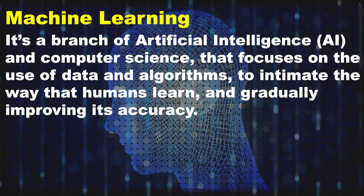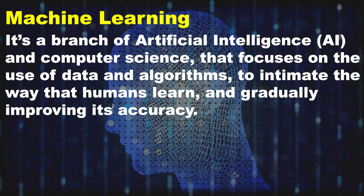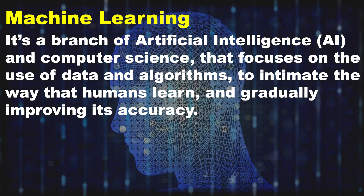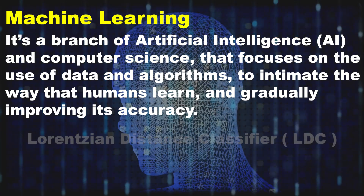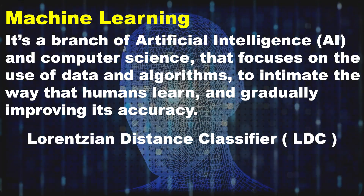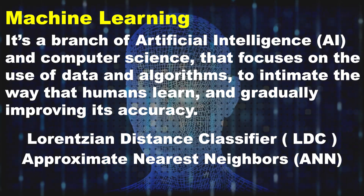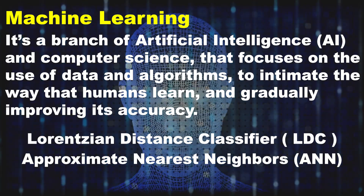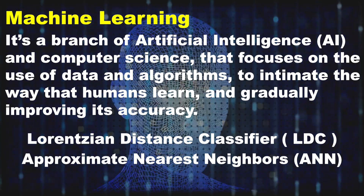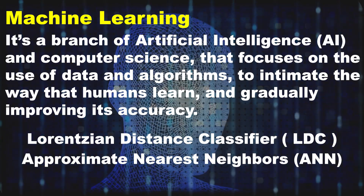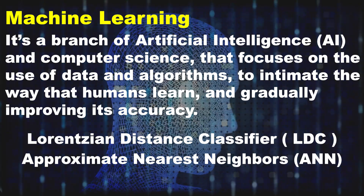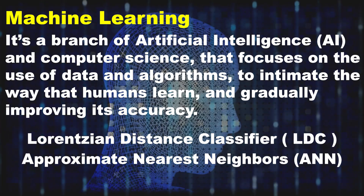Machine learning is a branch of artificial intelligence and computer science that focuses on the use of data and algorithms to imitate the way humans learn, gradually improving its accuracy. This indicator uses a special algorithm called the Lorentzian Distance Classifier alongside another algorithm, Approximate Nearest Neighbors, which are proven to be useful in predicting the direction of future price movements.